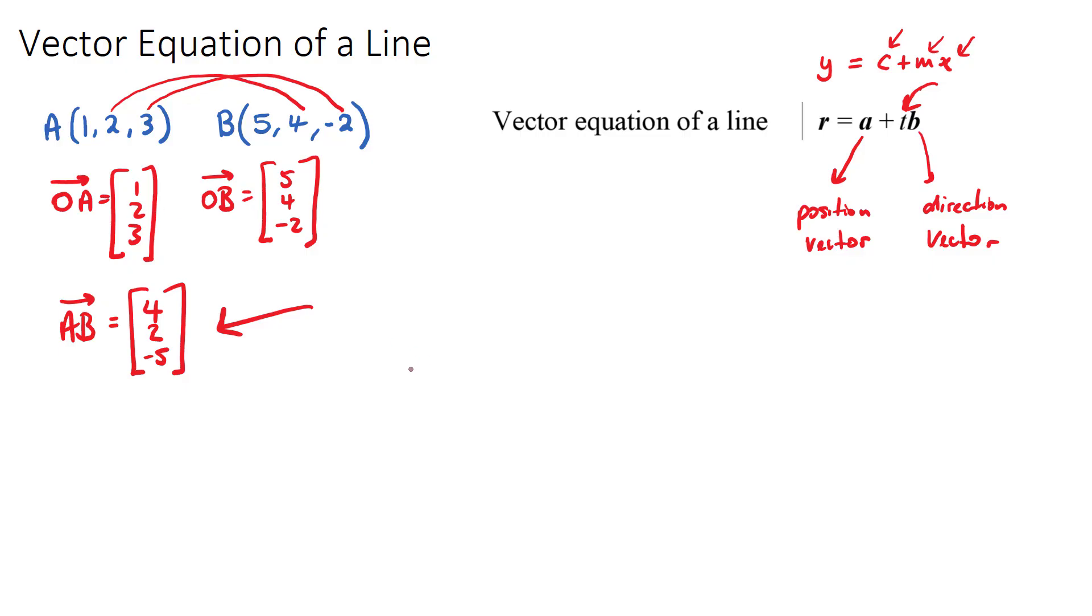So the vector equation of our line will be r equals, and we put our position vector that we're going to choose. I'm just going to choose the first one, 1, 2, 3. You could have chosen 5, 4, negative 2. That's fine. Plus, and we leave the t as our variable, just like we had x. And we put our direction vector, which will be AB, 4, 2, negative 5. So this is it. This is the answer of our vector equation of a line.